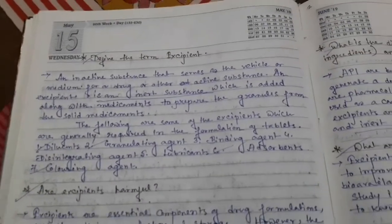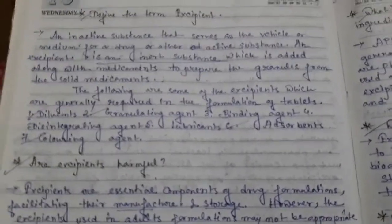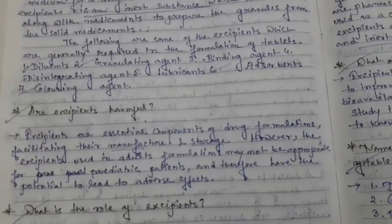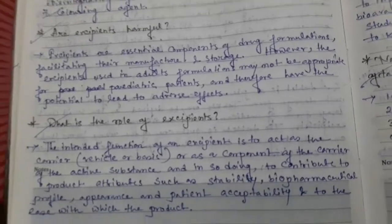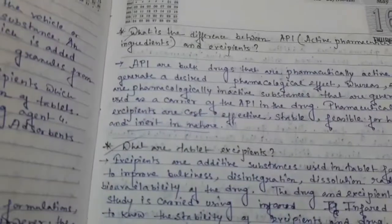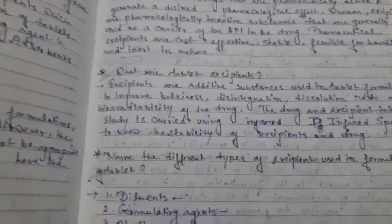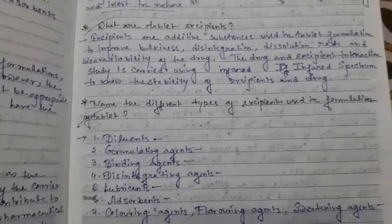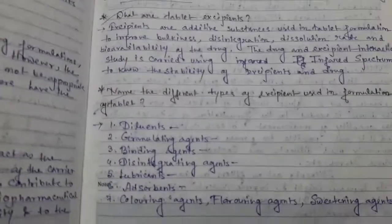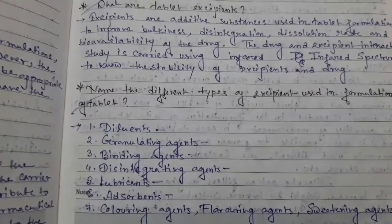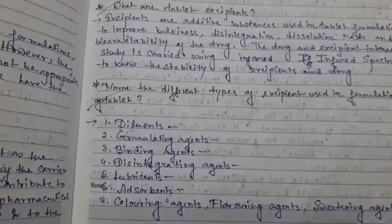What are the different types of excipients? I have already explained what excipients are and their functions. Are excipients harmful? No, they are very helpful. The types of excipients involved are: granulating agent, binding agent, disintegrating agent, lubricating agent, absorbent, and coloring agent. I will explain these excipient parts elaborately after some time.